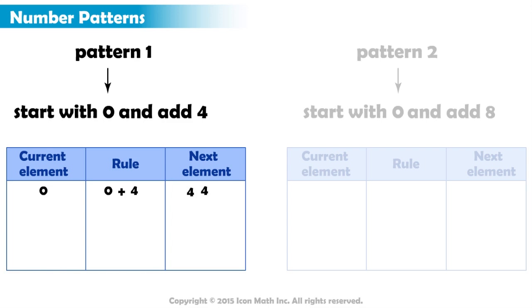Now, we take four from the results column and make it the current element, and we apply the rule again. Four plus four is eight. Now eight becomes the current element, and we apply the rule. Eight plus four is twelve.